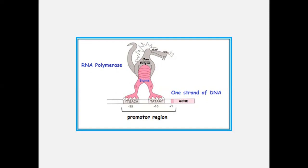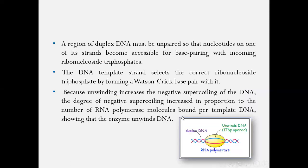Sigma factor helps RNA polymerase attach to the promoter side. Once attached, the sigma factor is removed. DNA unwinds because the DNA strands unpair, and then the transcription process starts here at the unpairing region.